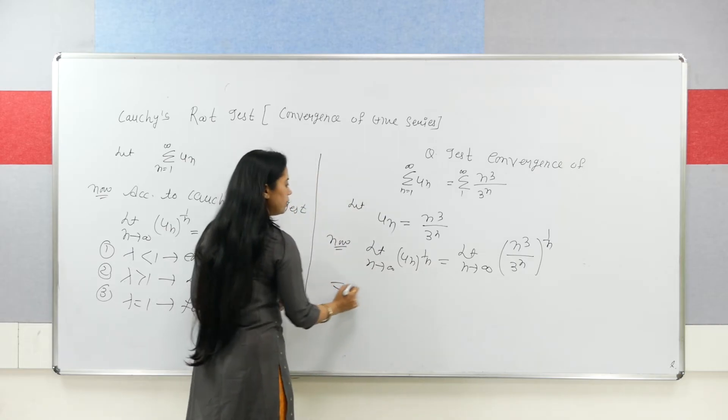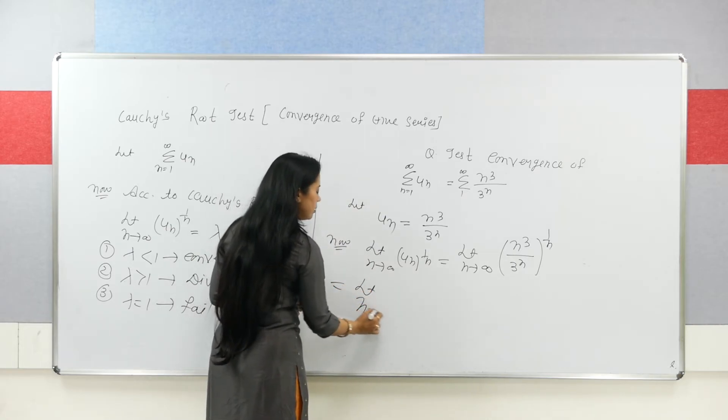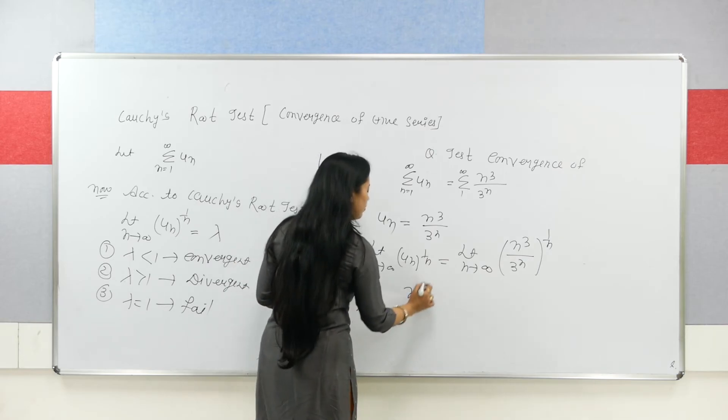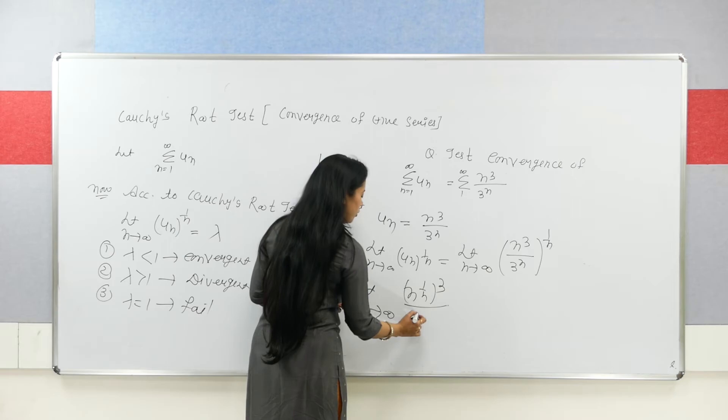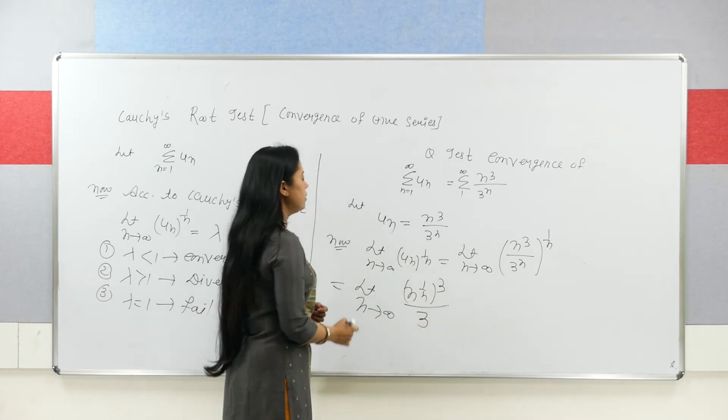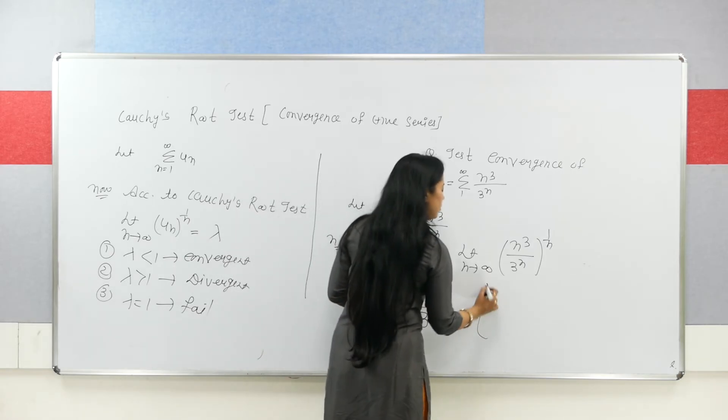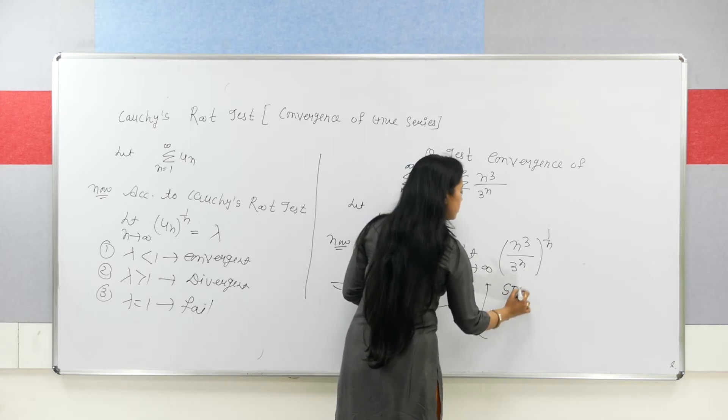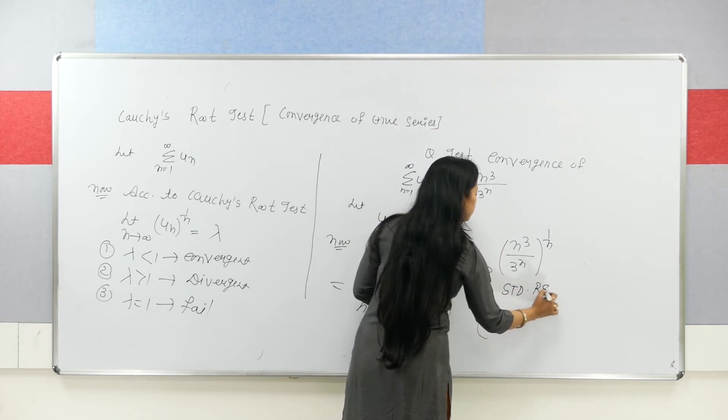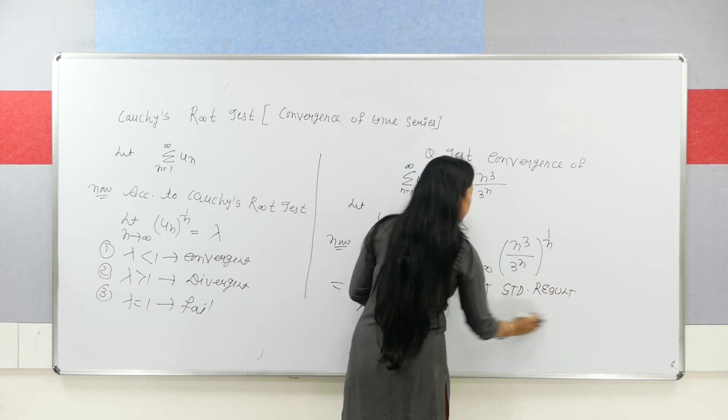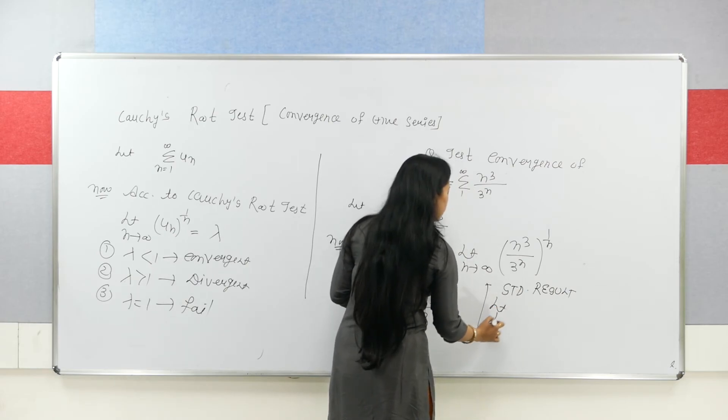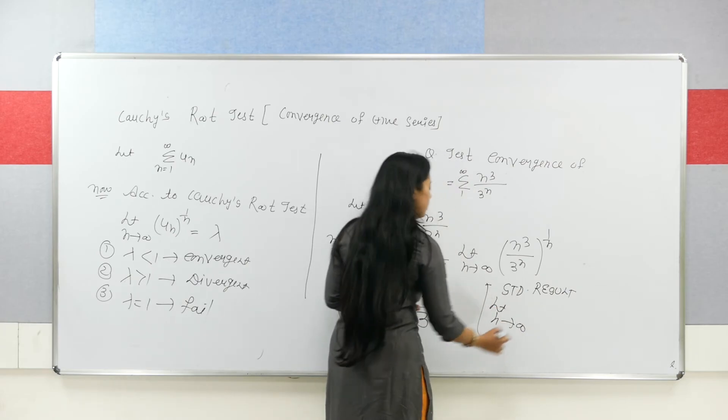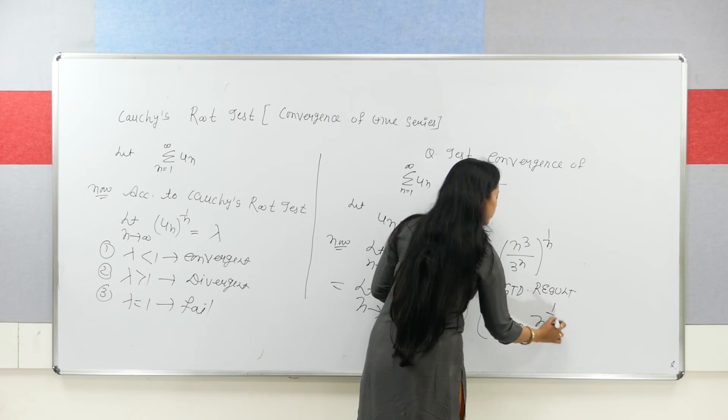Which can be calculated as limit n tends to infinity n to the power 1 by n, whole cube upon 3. Now we have a standard result that limit n tends to infinity n^(1/n) is equal to 1.